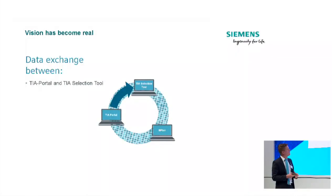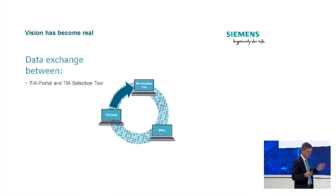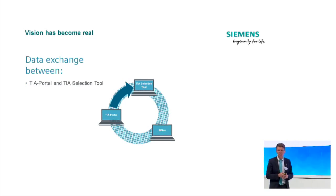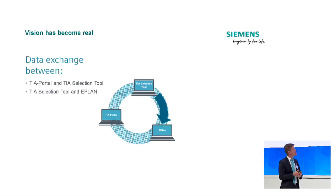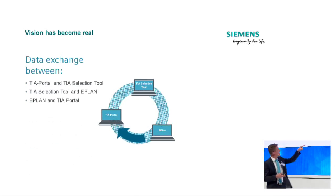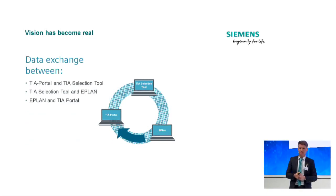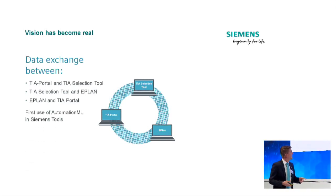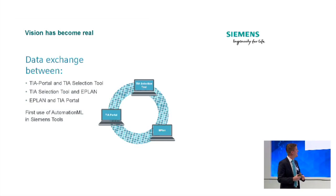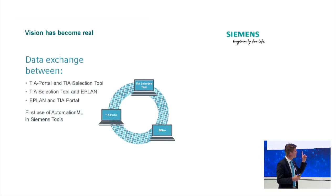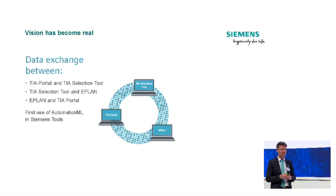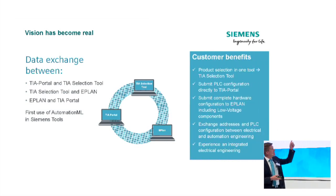Between the TIA Portal and the TIA Selection Tool, information can be exchanged. Also between the TIA Selection Tool and EPLAN — which is not a Siemens software tool but commonly used by our customers — we exchange information. And also between EPLAN and the TIA Portal. This guarantees a consistent exchange of data and represents the first use of AutomationML in an engineering software environment with Siemens tools.